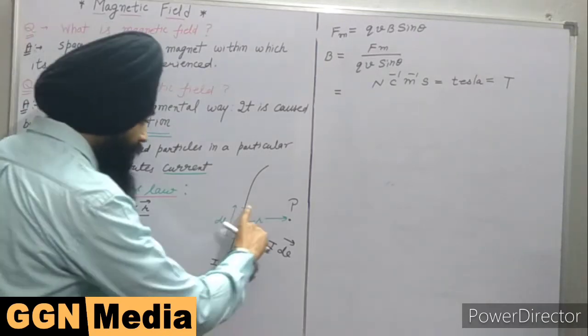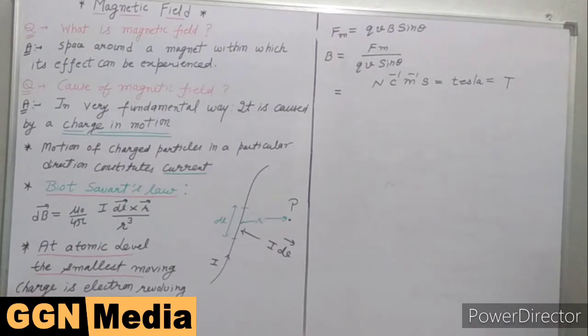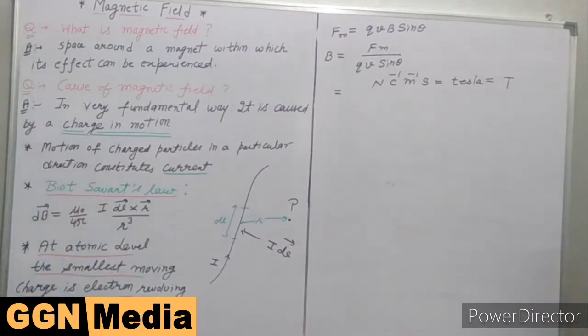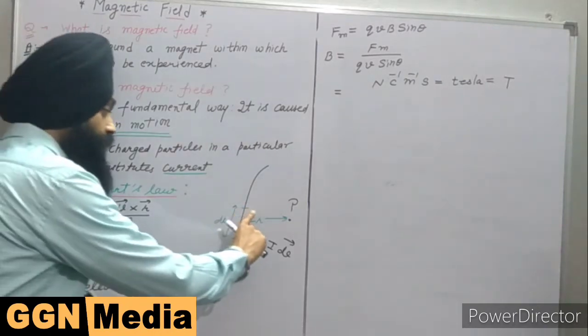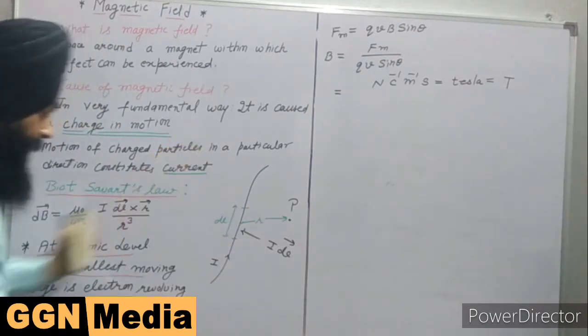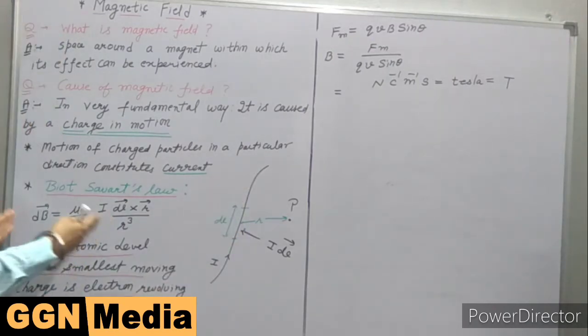This is a very important result to find out the magnetic field due to a current carrying wire. This is a small magnetic field due to this small portion of the wire. If you want to calculate the magnetic field due to the whole wire, you can integrate from initial length to the final length and you can get the final value of magnetic field.